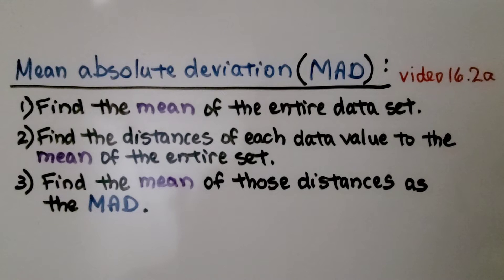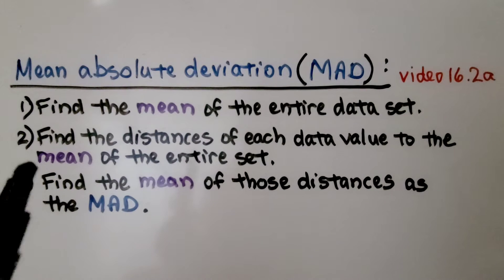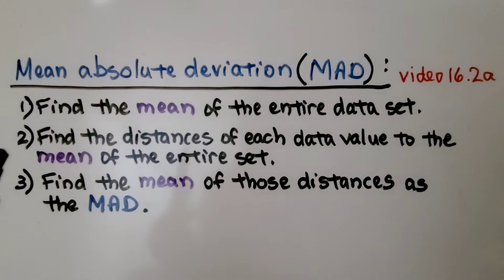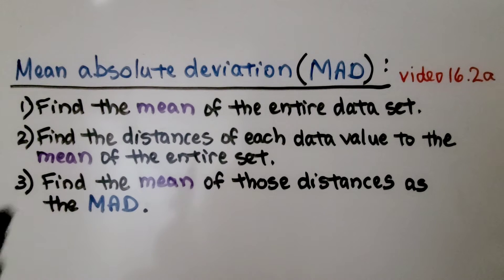As we learned in the last video, 16.2a, the mean absolute deviation is also called the MAD. The first thing we do is we find the mean of the entire data set. Then we find the distances of each data value, each number in the set, to that mean we just found. Then we find the mean of those distances as the MAD.